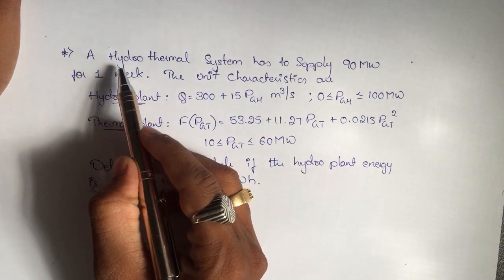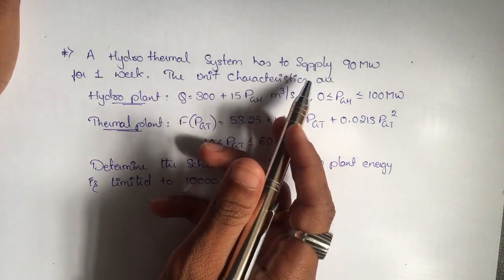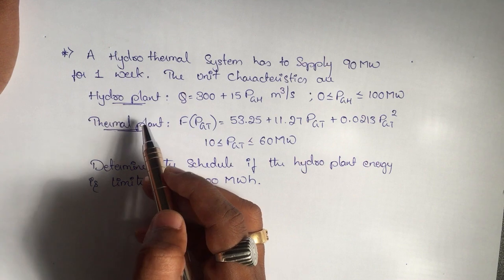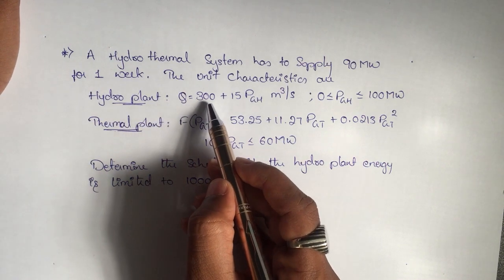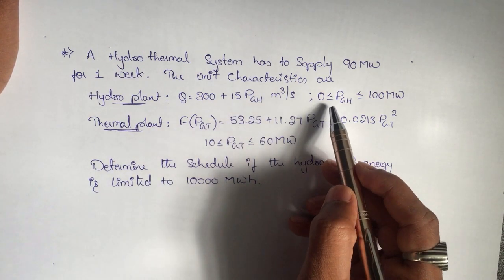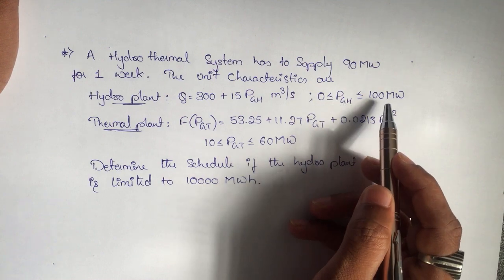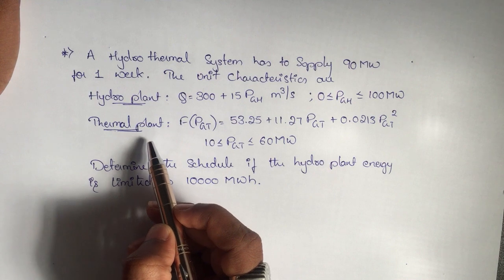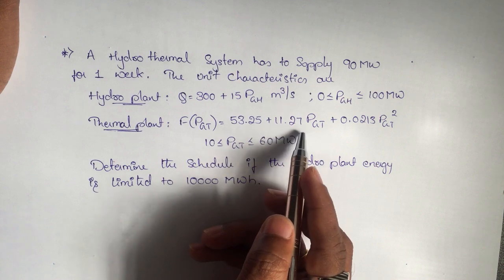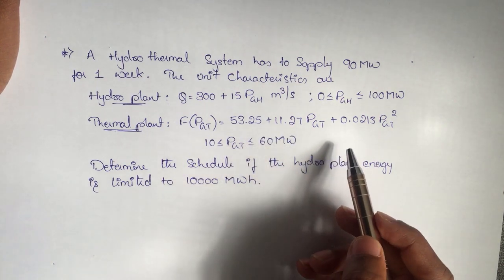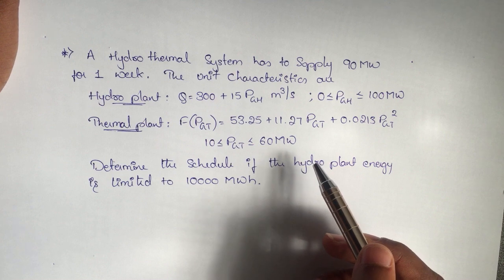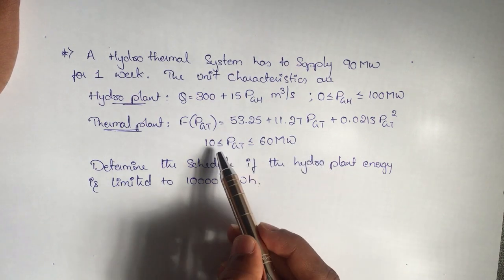A hydrothermal system has to supply 90 megawatt for one week. The unit characteristics are: hydro plant characteristic equation q = 300 + 15·P_GH meter cube per second, and the cost function for the thermal power plant is f(P_GT) = 53.25 + 11.27·P_GT + 0.0213·P_GT² in cost per megawatt hour.